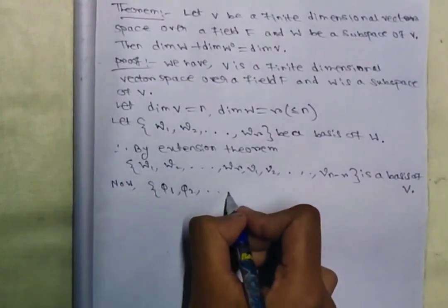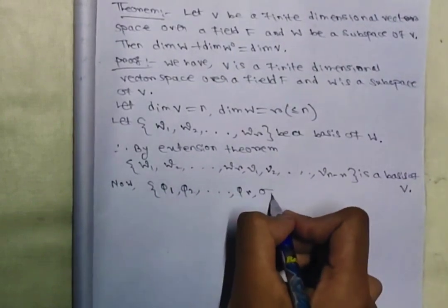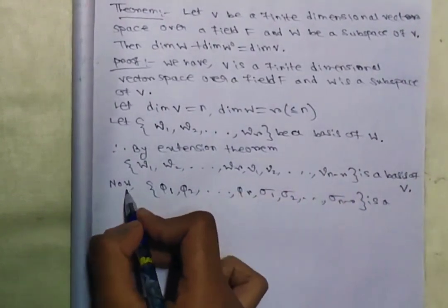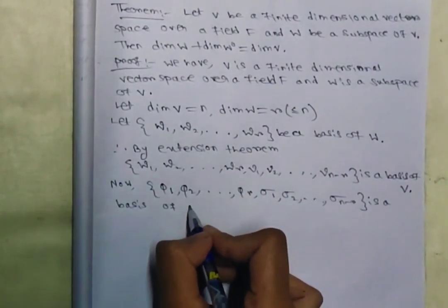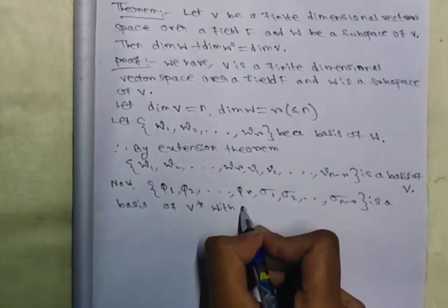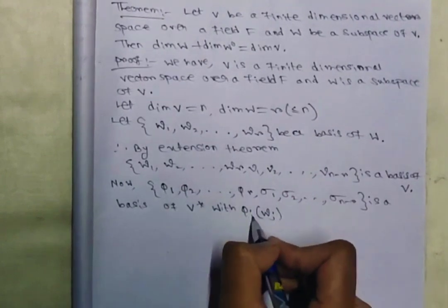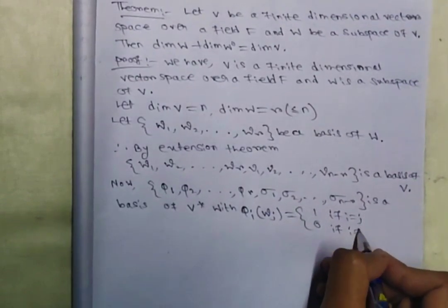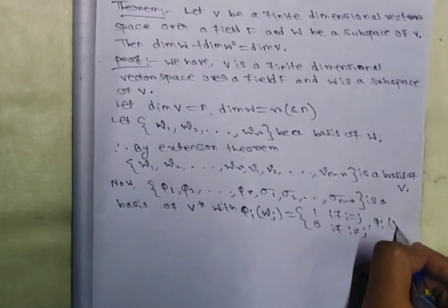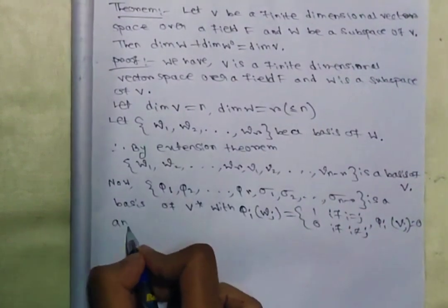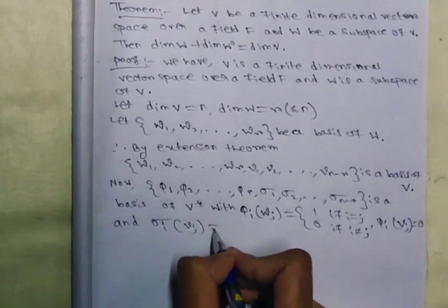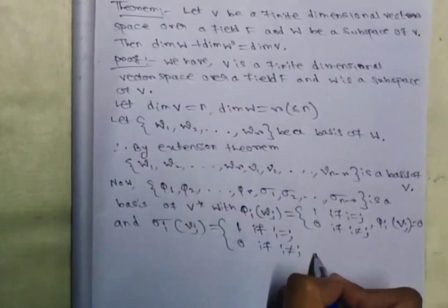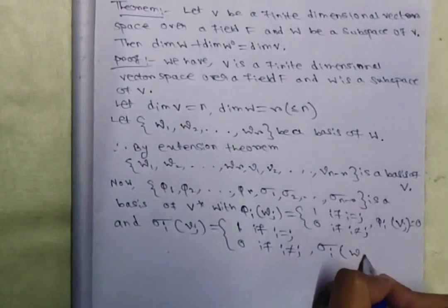Now phi_1, phi_2, ..., phi_r, sigma_1, sigma_2, ..., sigma_(n-r) is a basis of the dual space V star, where phi_i(w_j) equals 1 if i equals j and 0 if i not equals j, by definition. Also phi_i(v_j) equals 0, and sigma_i(v_j) equals 1 if i equals j and 0 if i not equals j. Similarly, sigma_i(w_j) equals 0.